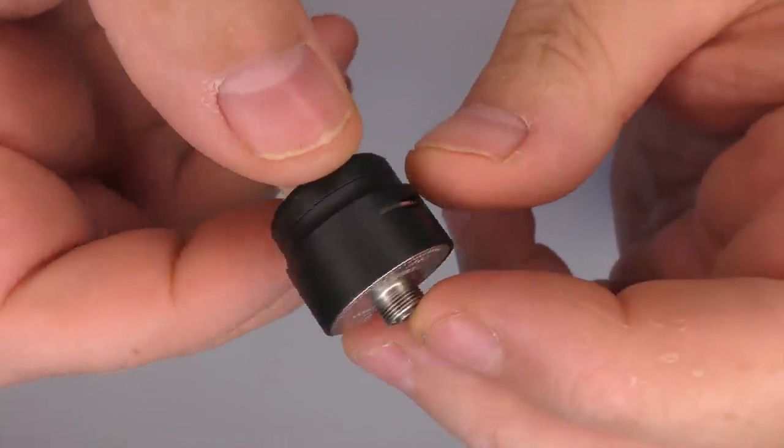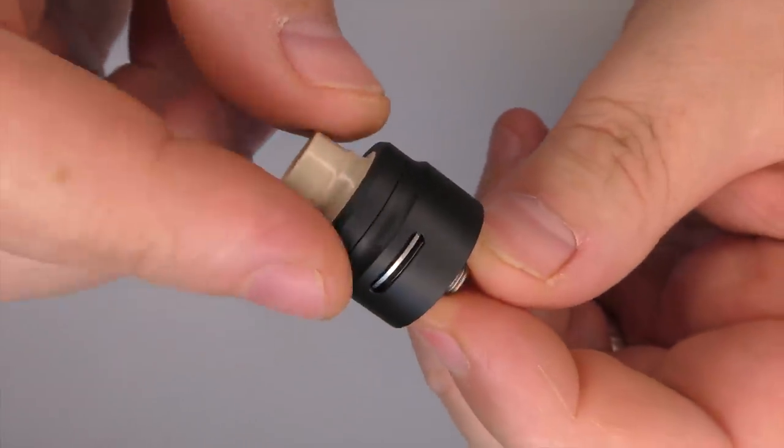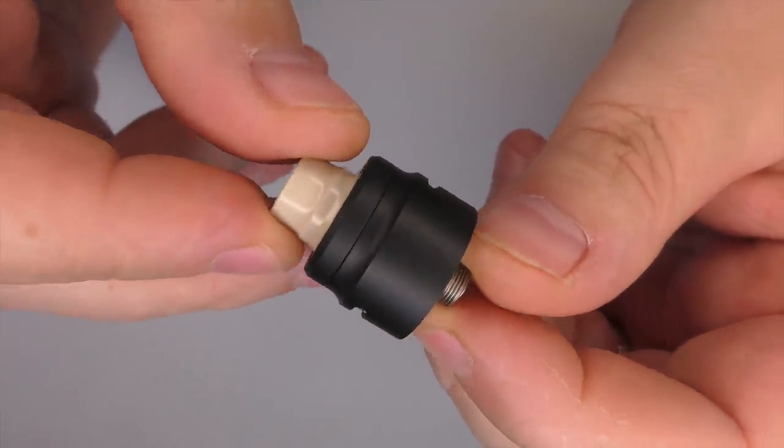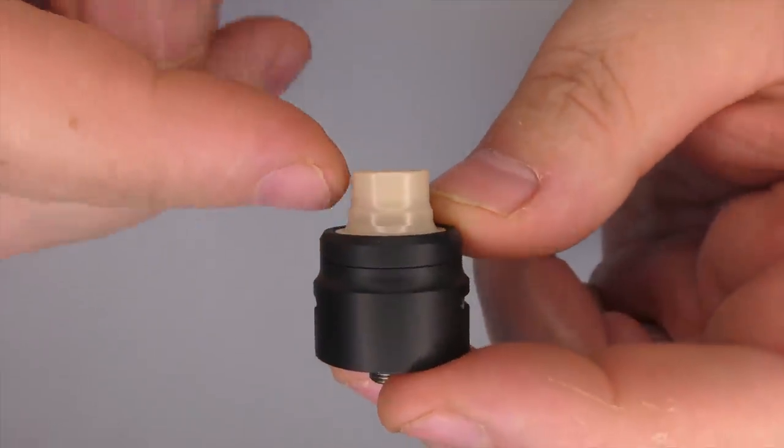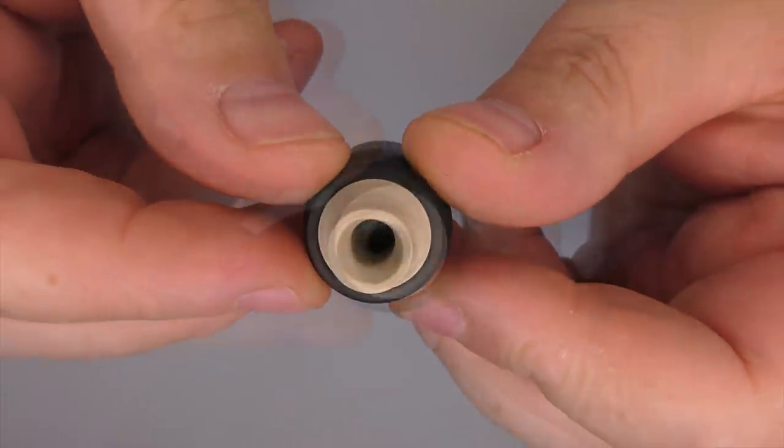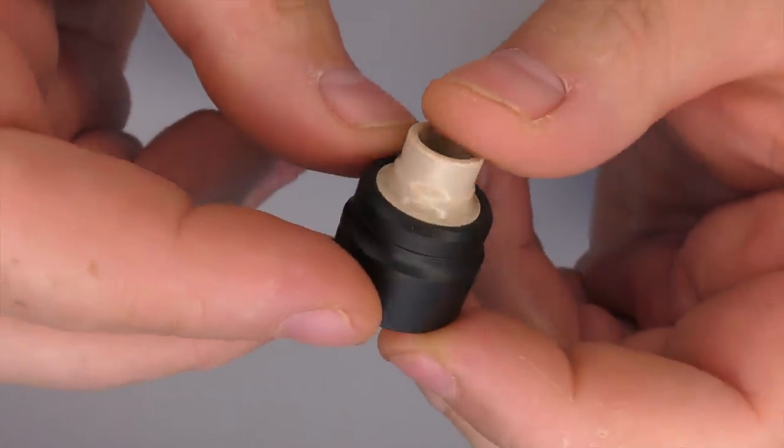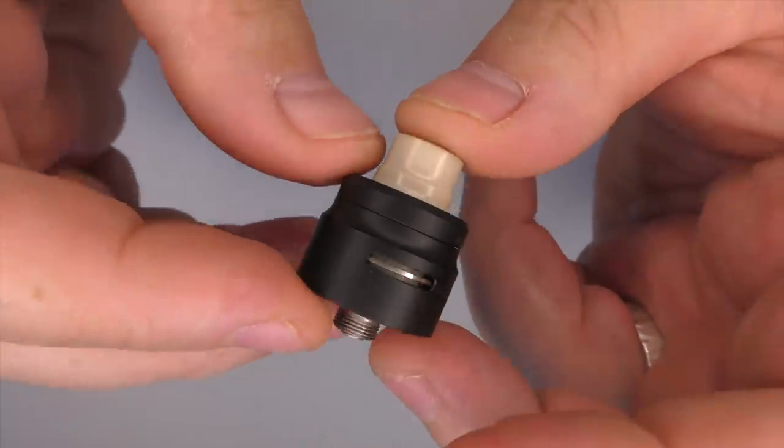It's stainless steel 316. The top cap is actually stainless steel and it's DLC, and you have a natural peak drip tip for this one. The posts have been upgraded inside, pretty much the posts are the same as the Armor S now.